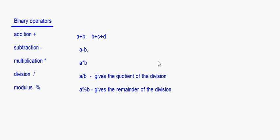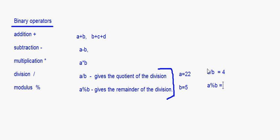For example, if a is equal to 22 and b is equal to 5, then a divided by b gives us 4, which is the quotient (since 4×5=20). Whereas a modulus b gives 2, because 2 is the remainder. We will take up questions on binary operators in our next session.